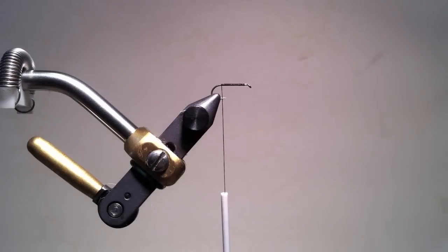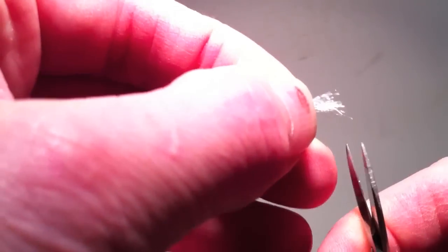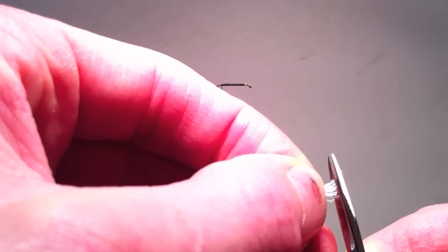This fly is called a quad because it has four supposed triggers. It has a posted wing height, a prominent thorax, a segmented body, and a shuck. The shuck I'll be tying in now.